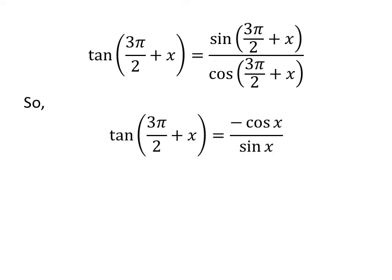Let us apply the above identities in the above expression of tangent of 3 times pi upon 2 plus x. So, tangent of 3 times pi upon 2 plus x is equal to minus cosine of x upon sine of x.